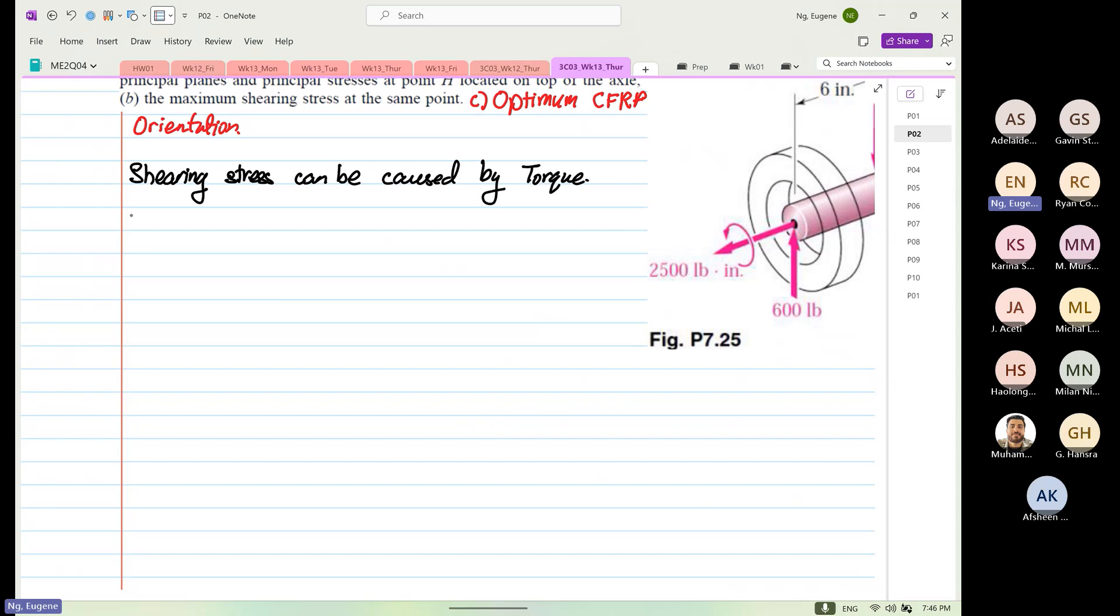We know that the formula is τ equals TR divided by J, right? T is our torque. Torque over here can be in newton-meter or pound-inch. R can be the radius in meters or inches. J is polar second moment of area, and it is in meter to the fourth or inches to the power of four.